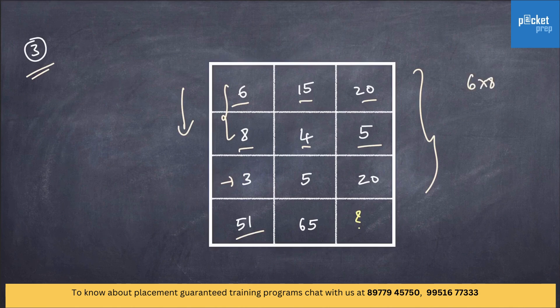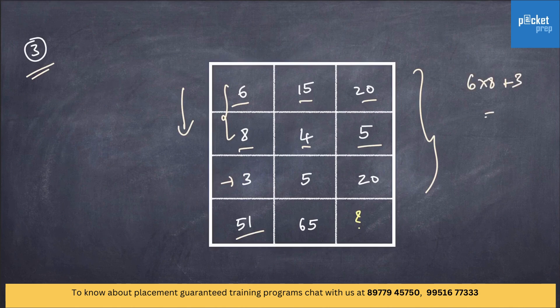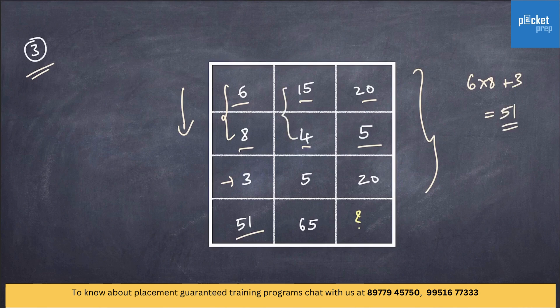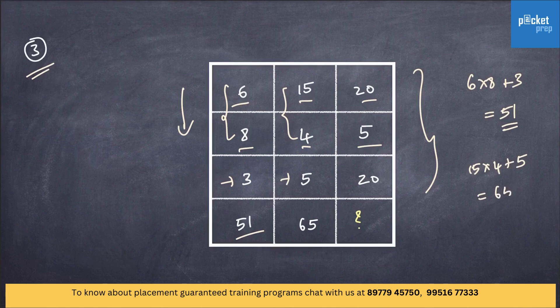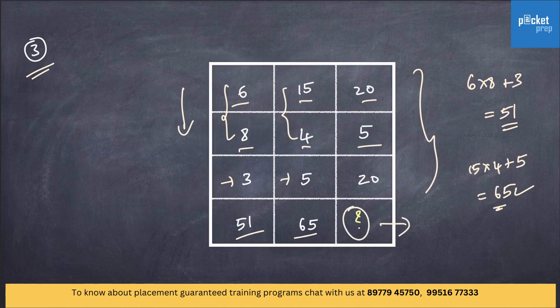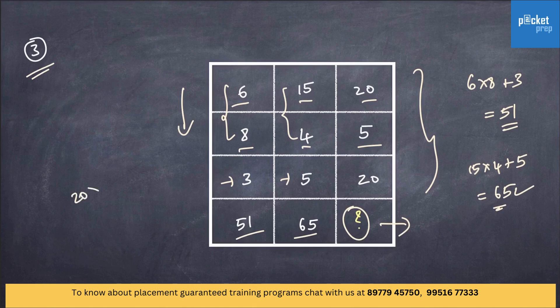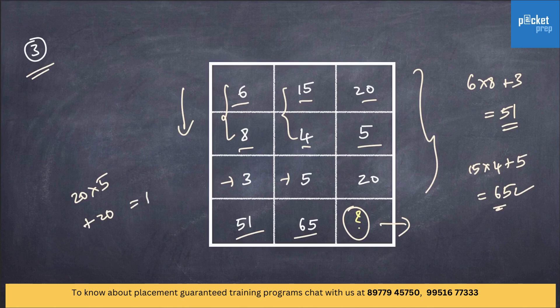Let's see whether it works or not. 6 into 8 plus 3 equals 51. True. Similarly, 15 into 4 plus 5 equals 65. So, this is correct. So, what would be the missing term now? It is pretty easy to find out: 20 into 5 plus 20, and the answer is 120. So, the missing term is 120.